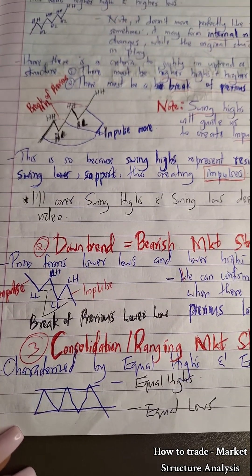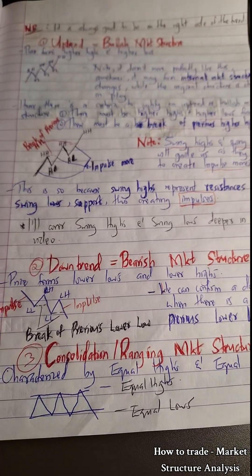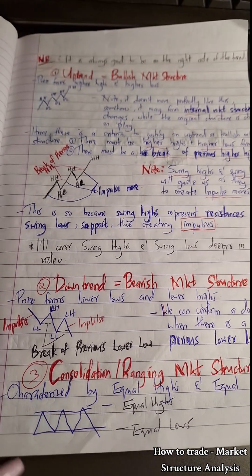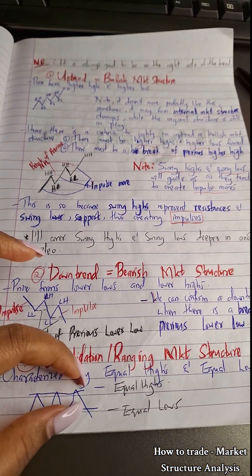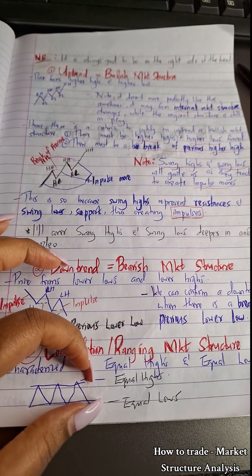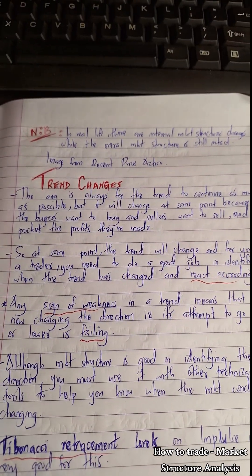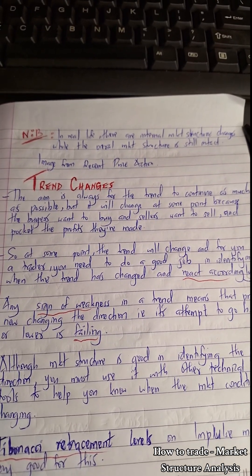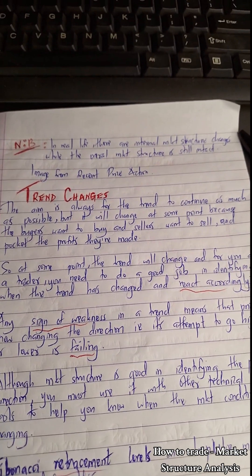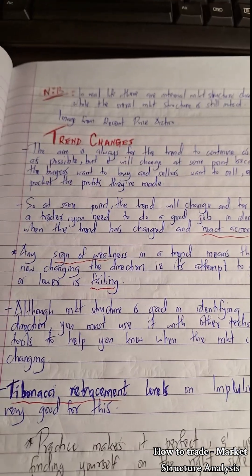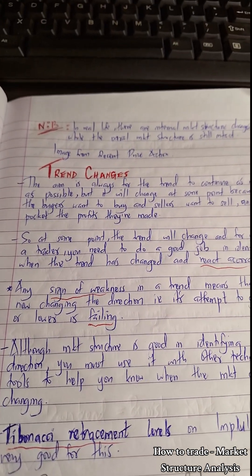The third market structure is consolidation, also called the ranging market structure. It's characterized by equal highs and equal lows, and normally forms like a channel — it's easy to identify. Please note that in real life there are internal market structure changes while the overall market structure is still intact.